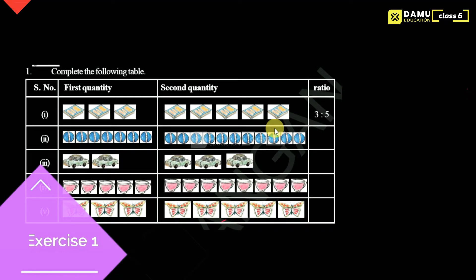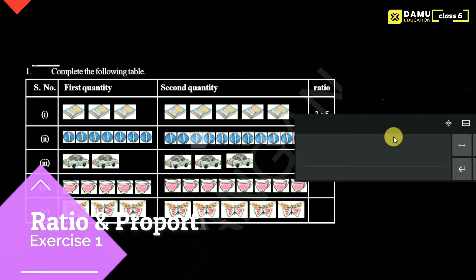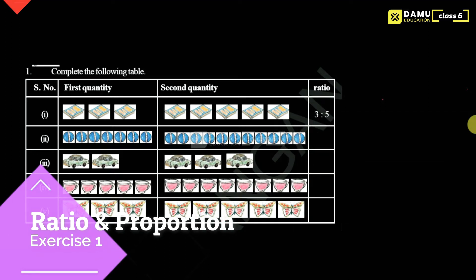In this module, we are going to discuss: complete the following table. They are given first quantity, second quantity, and ratio. Ratio is nothing but division — numerator by denominator. It will be denoted with 'is to'. This is the way to represent it.